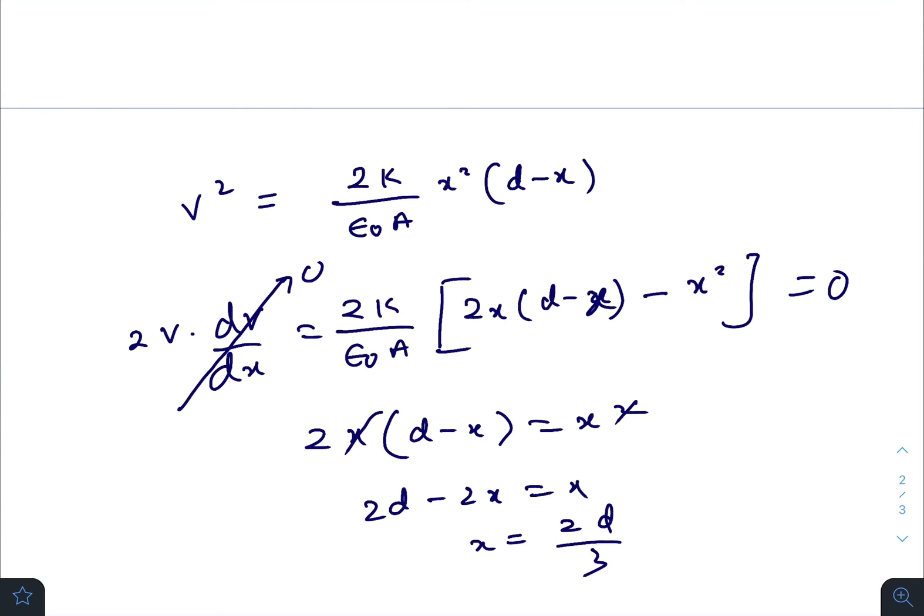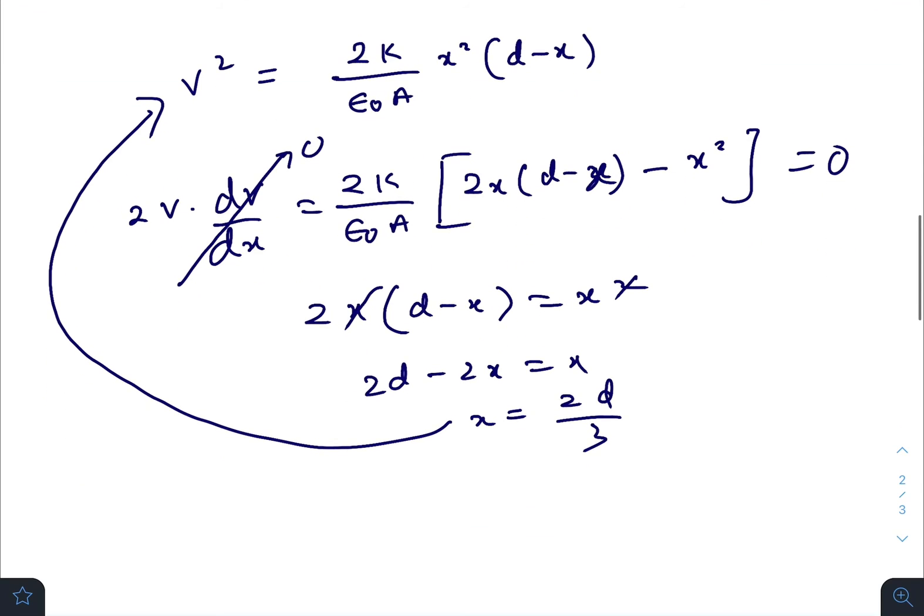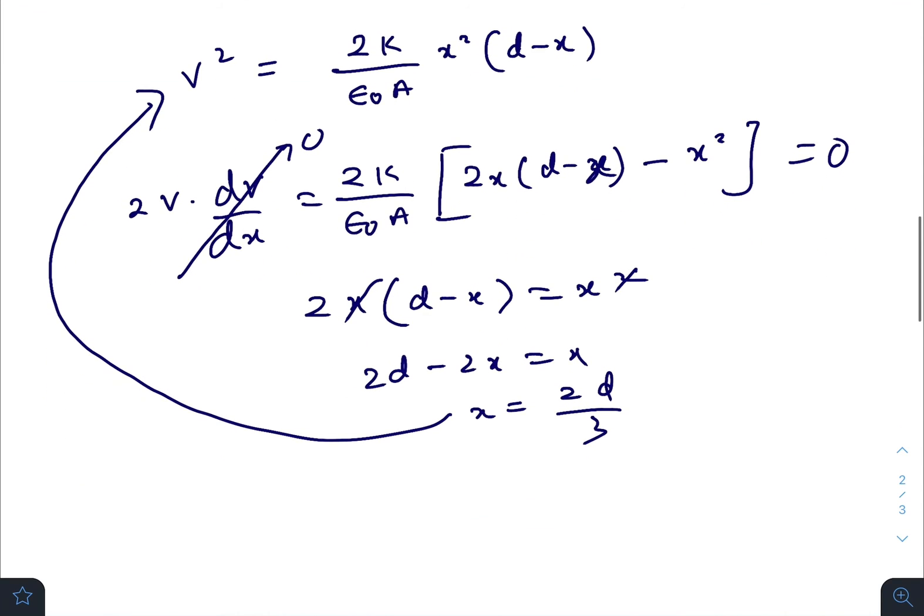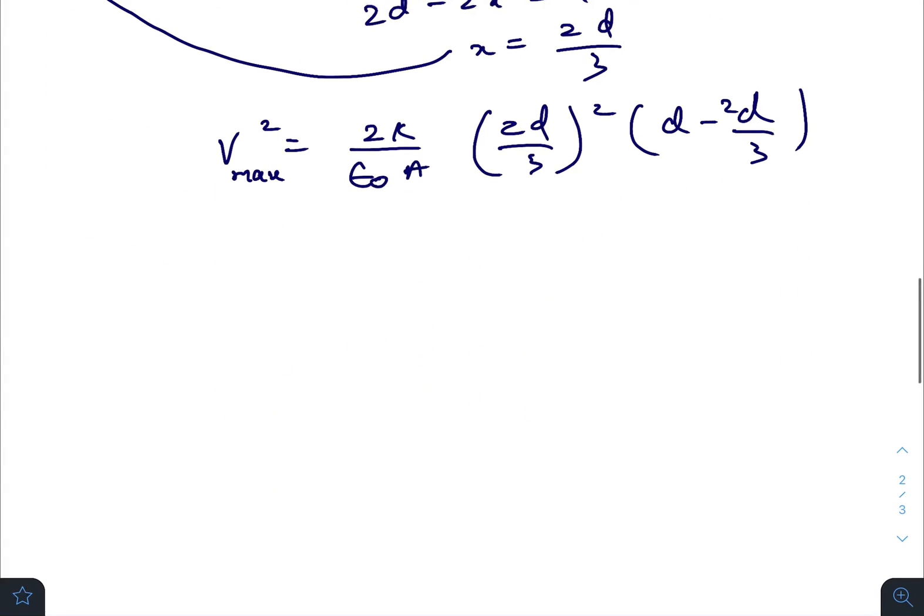Now we will just put this value in this equation, then we will get the maximum value of the potential difference that can be applied across the plates so that both the plates does not hit each other. So V²_max equals to 2K/(ε₀A)·(2D/3)²·(D/3), so 2K/(ε₀A)·4D²/9·D/3.